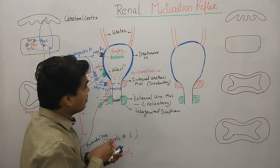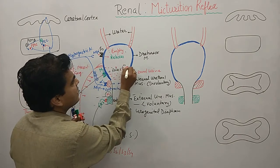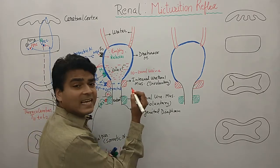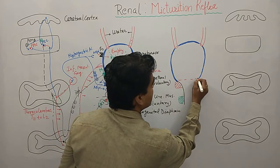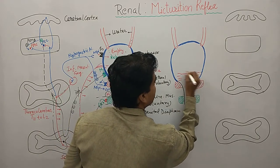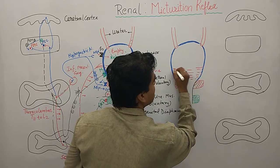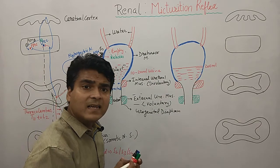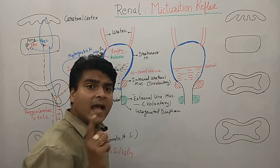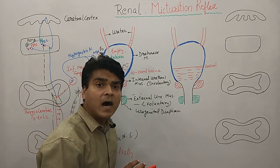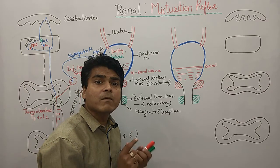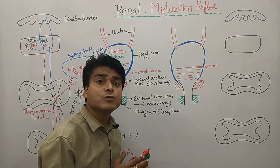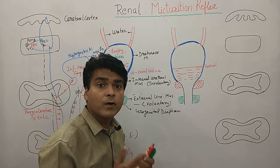The area fills regularly. When 200 ml of urine is filled, that is the initial mark when our brain tells us we need to go for urination.